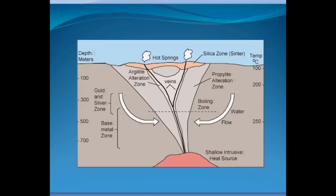Here's a schematic to show you how these deposits form. At the bottom we have a shallow intrusive heat source — that's what drives the system. It puts the heat in that makes water circulate. The white arrows show groundwater in the system that gets heated by exposure to this heat source. Where there are faults, the water can circulate — it comes in from the side, circulates up the fault zone, and comes out on the surface as hot springs, geysers, and similar features.